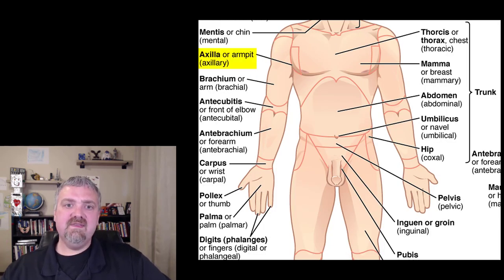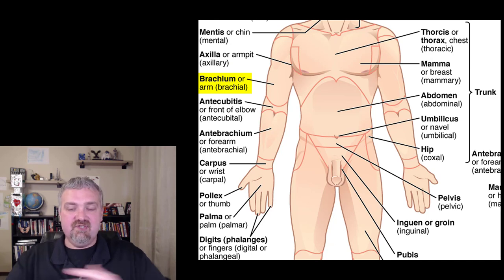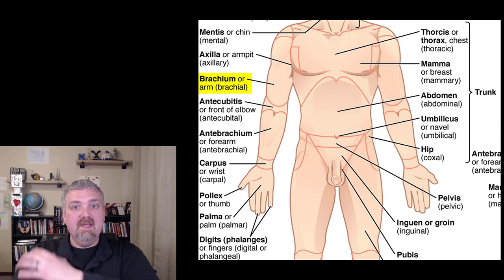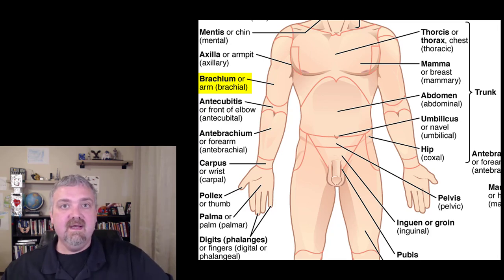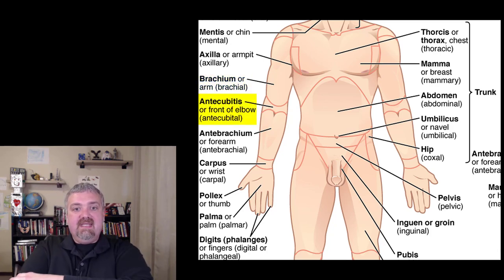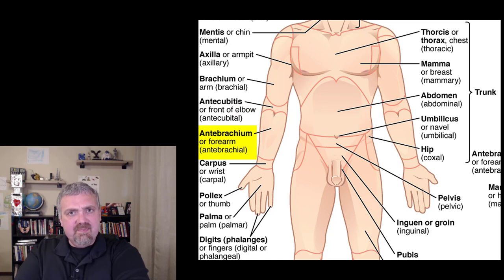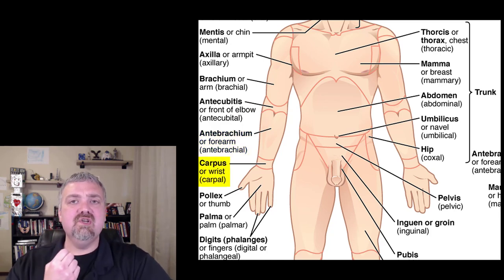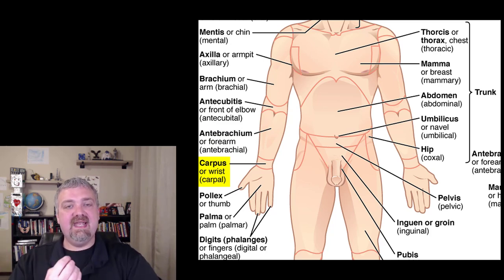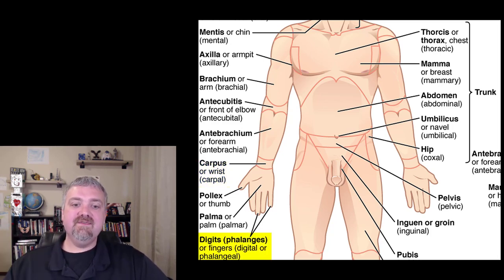The axilla is your armpit — that one comes up quite a bit. Your arm is called the brachium. This whole thing isn't your arm; this part up here is the arm, and this is your forearm down here. So the brachium is your arm, and you'll see the brachial muscles, brachial arteries, etc. are going to be there. The antecubitus is the front of the elbow. The antebrachium would be your forearm. Your wrist is your carpus — people say carpe diem, seize the day; you seize something with your hands. Your fingers are going to be your digits or your phalanges. The palm of your hand, just like you already know. Then your thumb is called the pollux.